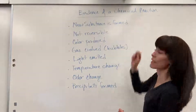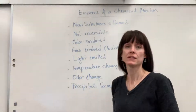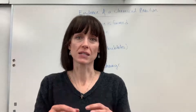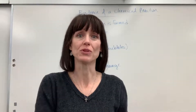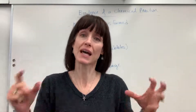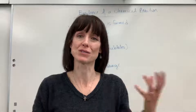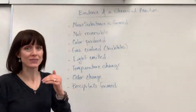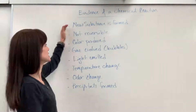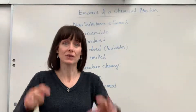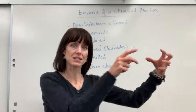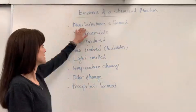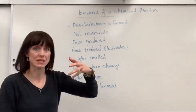What is a chemical change? This is going to be when atoms rearrange from reactants and form something new — they form a new product. So the first piece of evidence is going to be that a new substance is formed. Those atoms rearrange from reactants and form something new as the product.